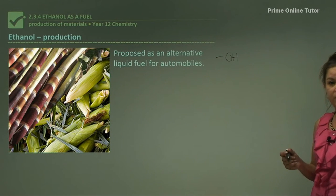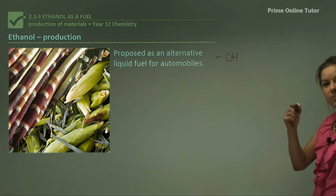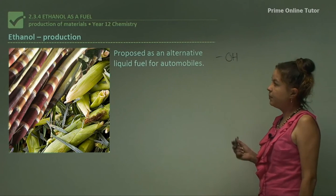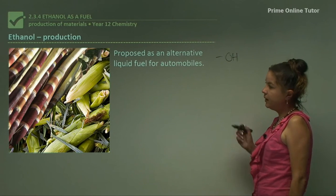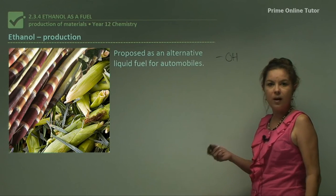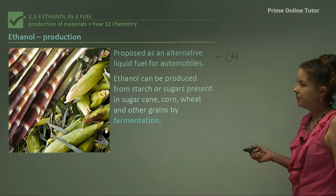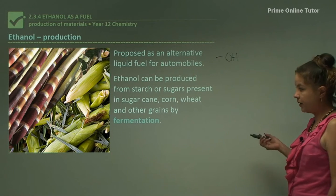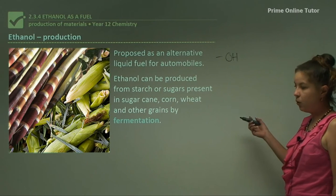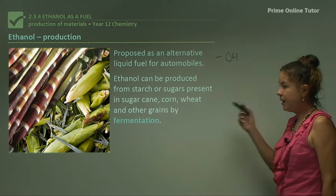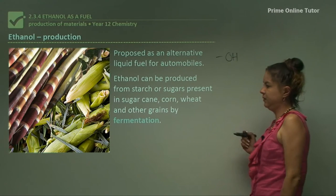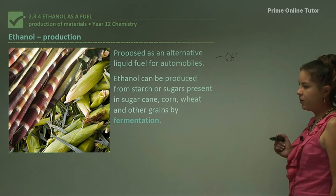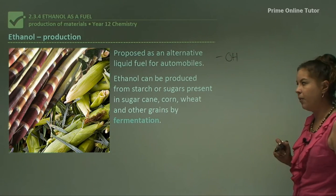Now let's look at the production of ethanol — how do we get this ethanol so that we can use it for fuel? It has been proposed as an alternative liquid fuel for automobiles. Ethanol can be produced from starch or sugars present in sugarcane, corn, wheat, and other grains by fermentation. There are many other grains such as barley and other crops that we can get ethanol from.